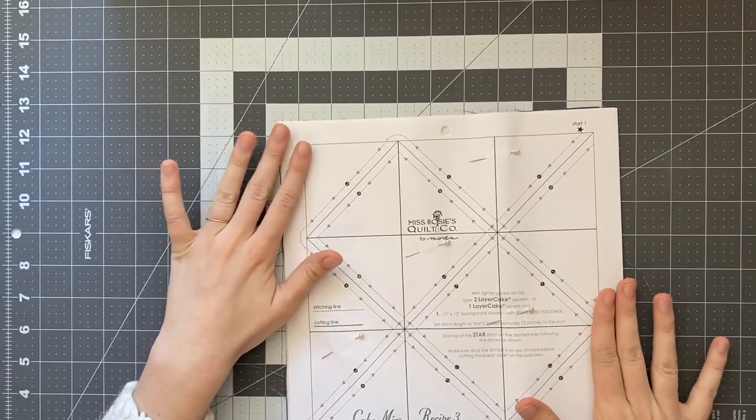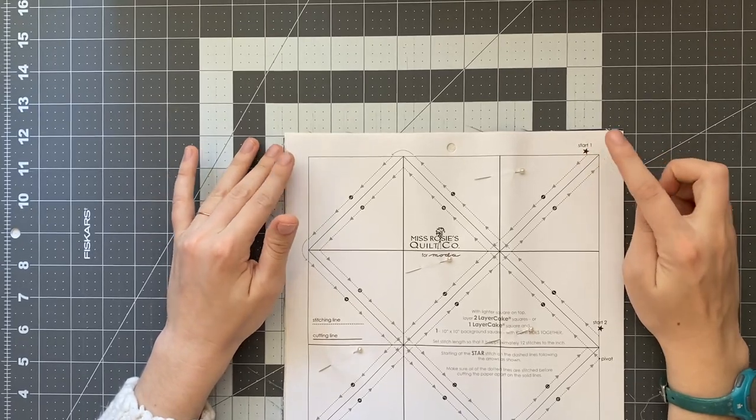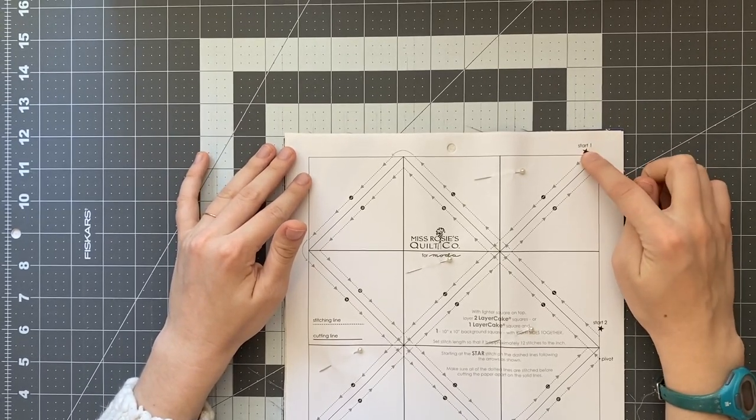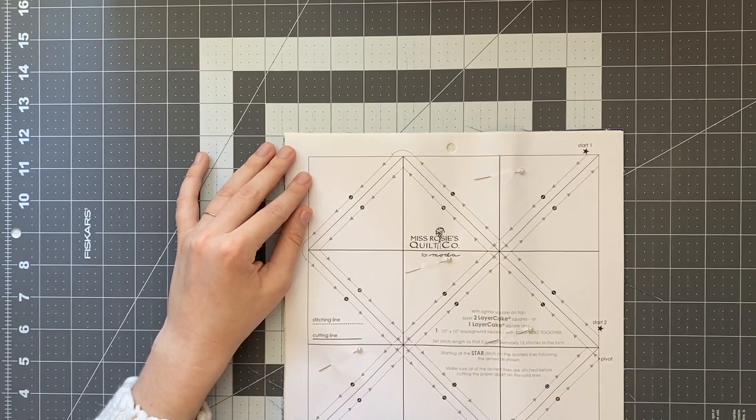So now what I'm gonna do is I'm gonna take it over to my sewing machine and I'm going to sew on the lines following the instructions they give me. So starting at the first star over here going here and then you can see there's a little arrow in the corner and I'm gonna turn around pivot follow line number four five and six